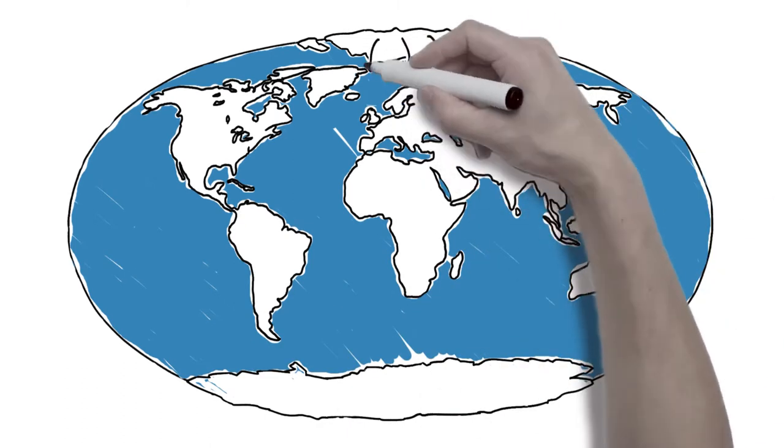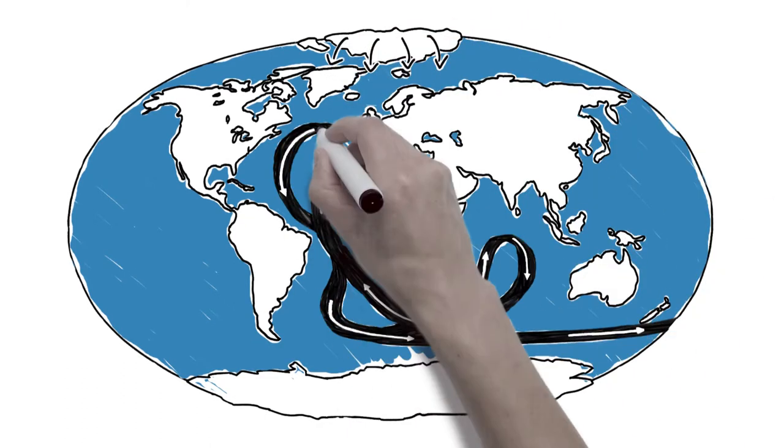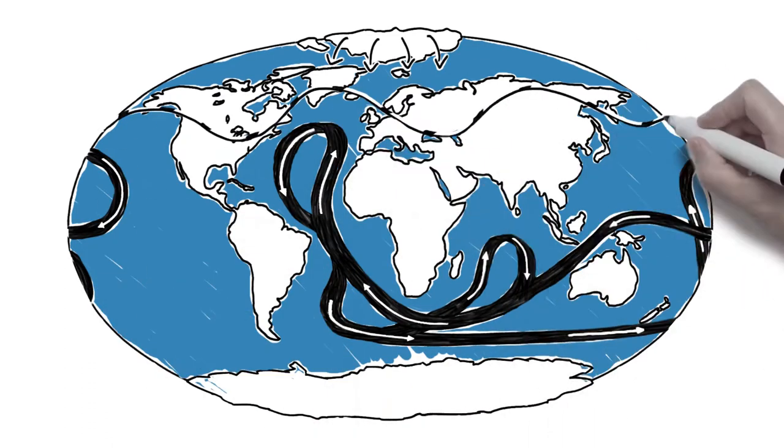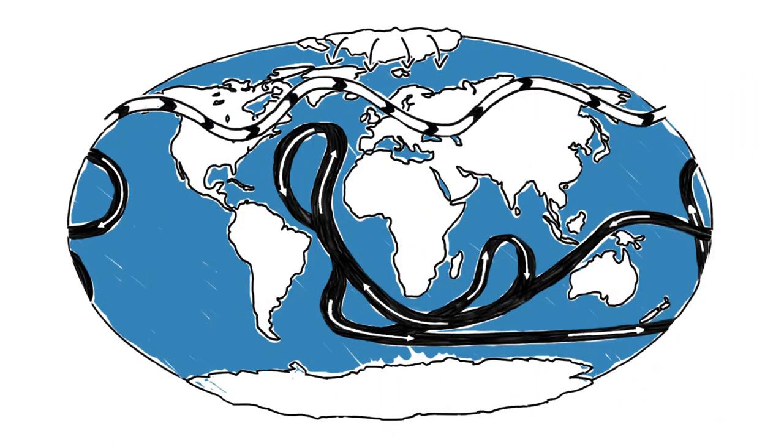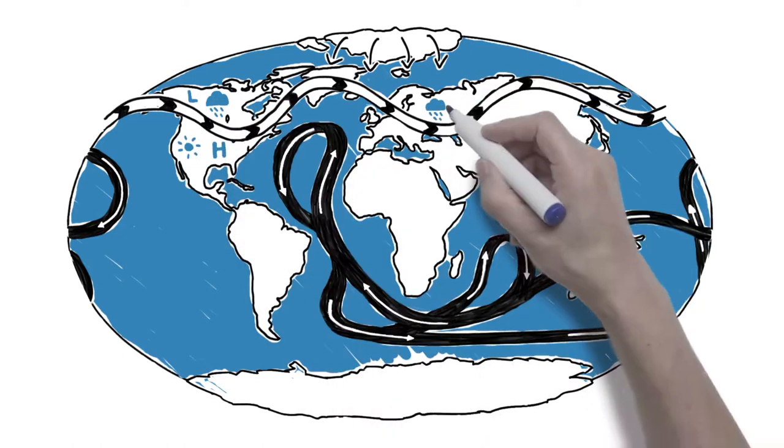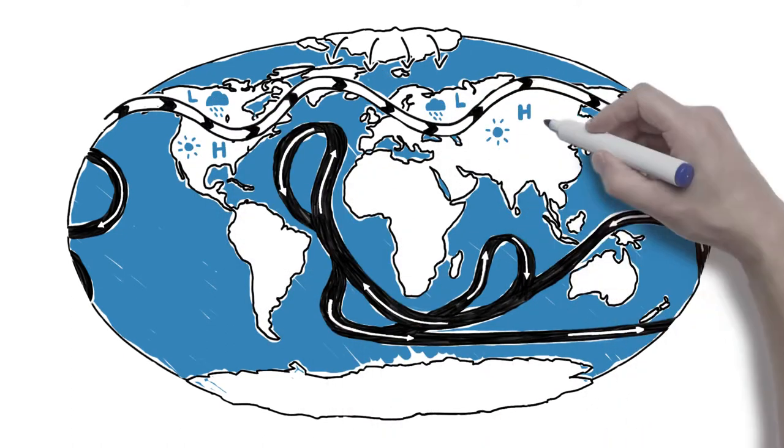Warming Arctic air masses and declining sea ice are believed to affect ocean circulation and the jet stream, and are potentially linked to extreme phenomena such as cold spells, heat waves and droughts in the northern hemisphere.